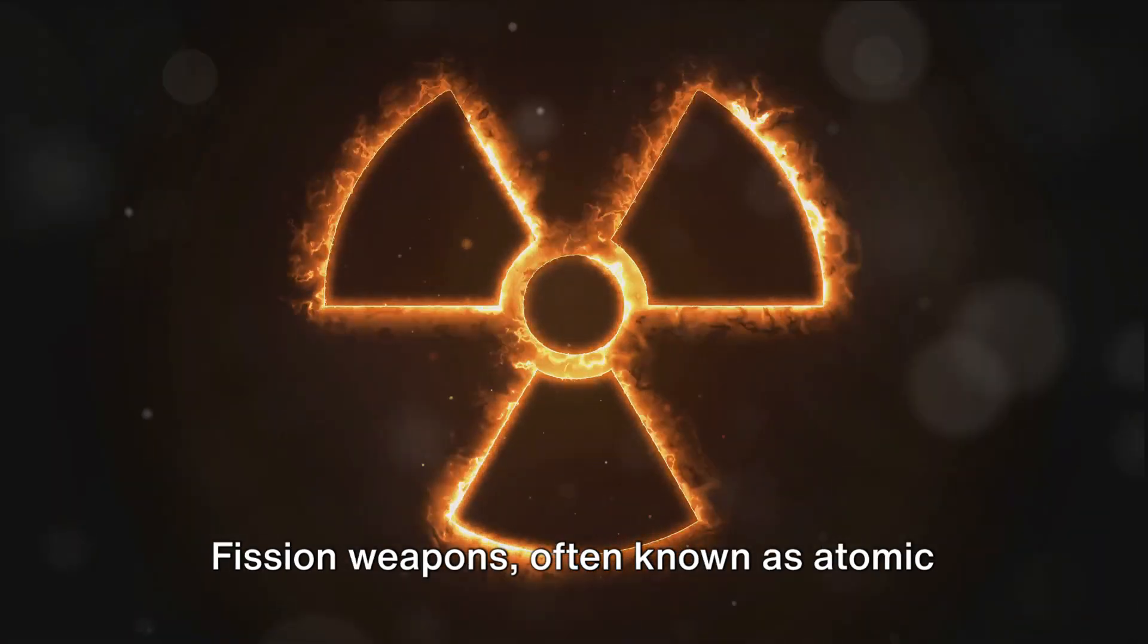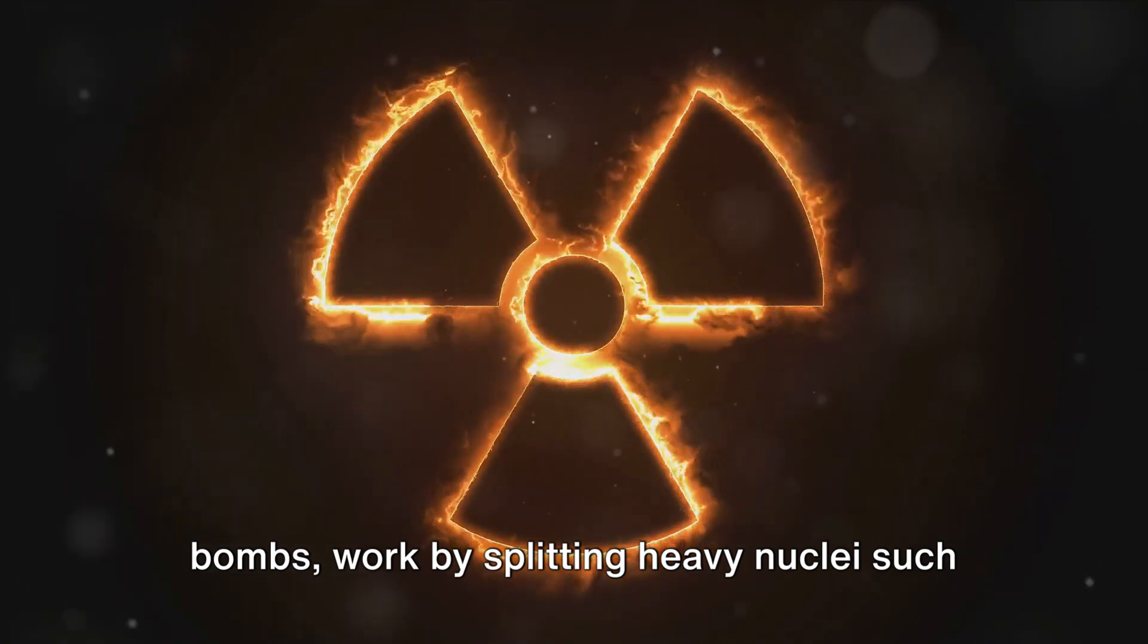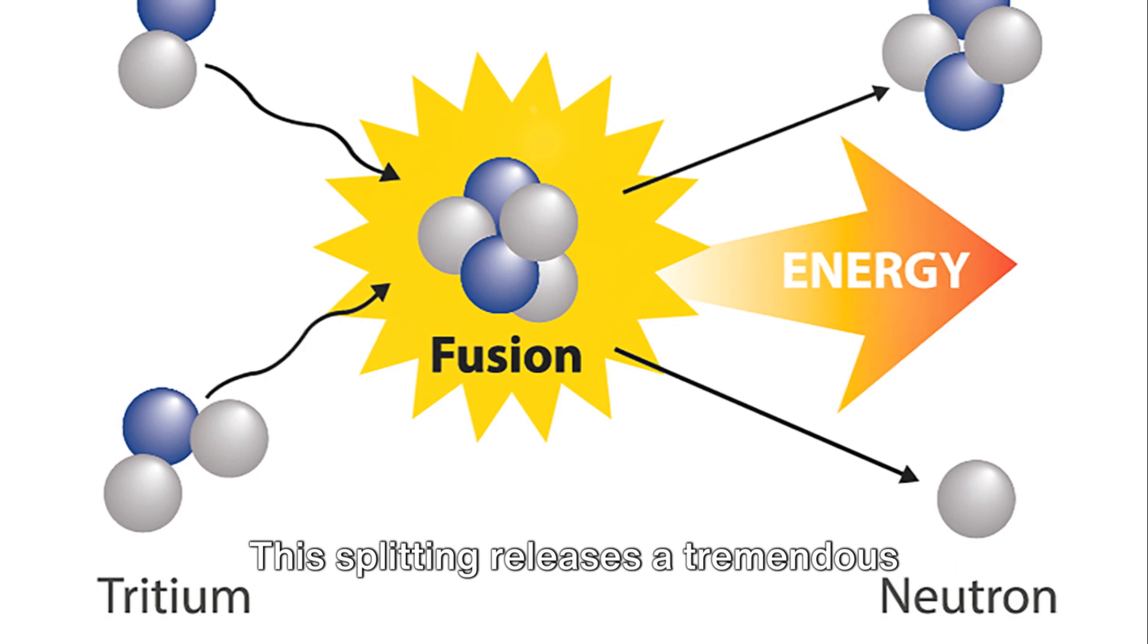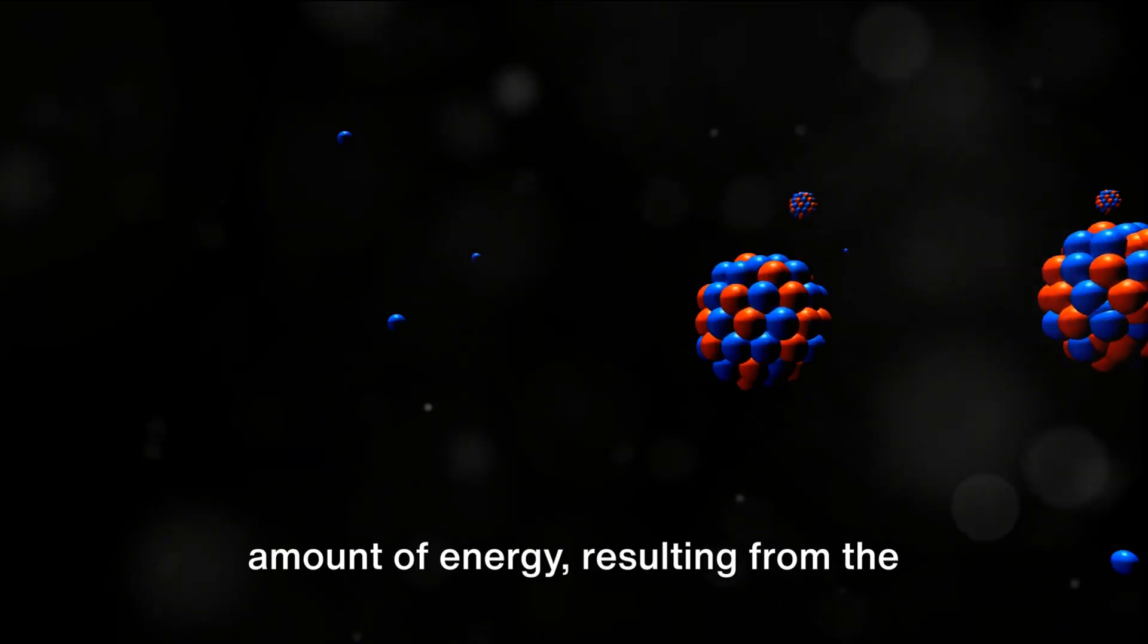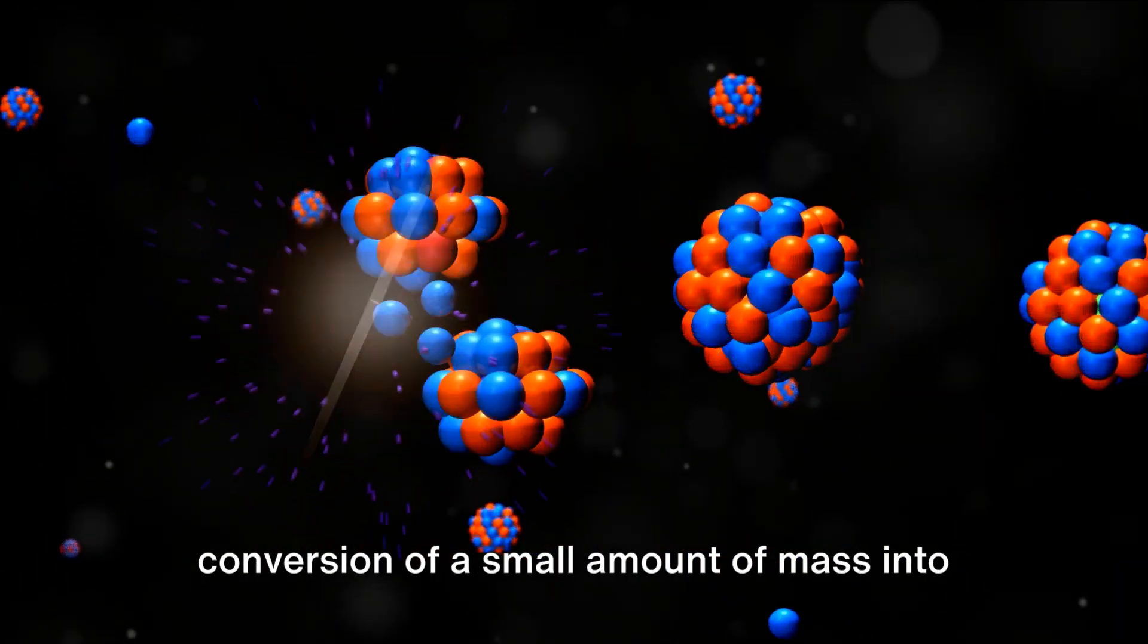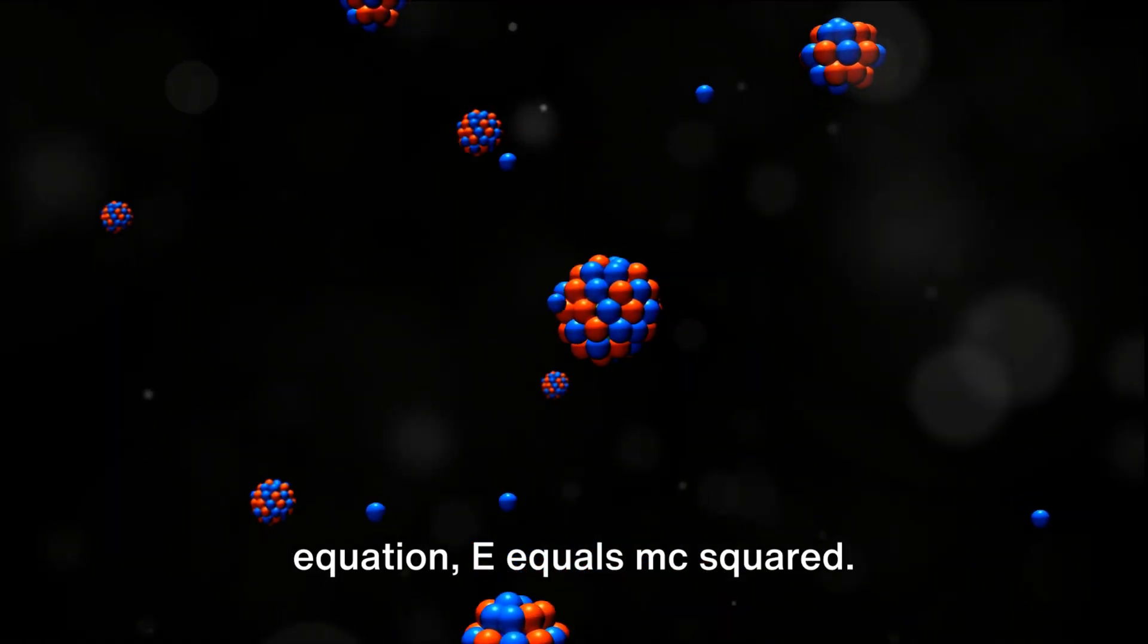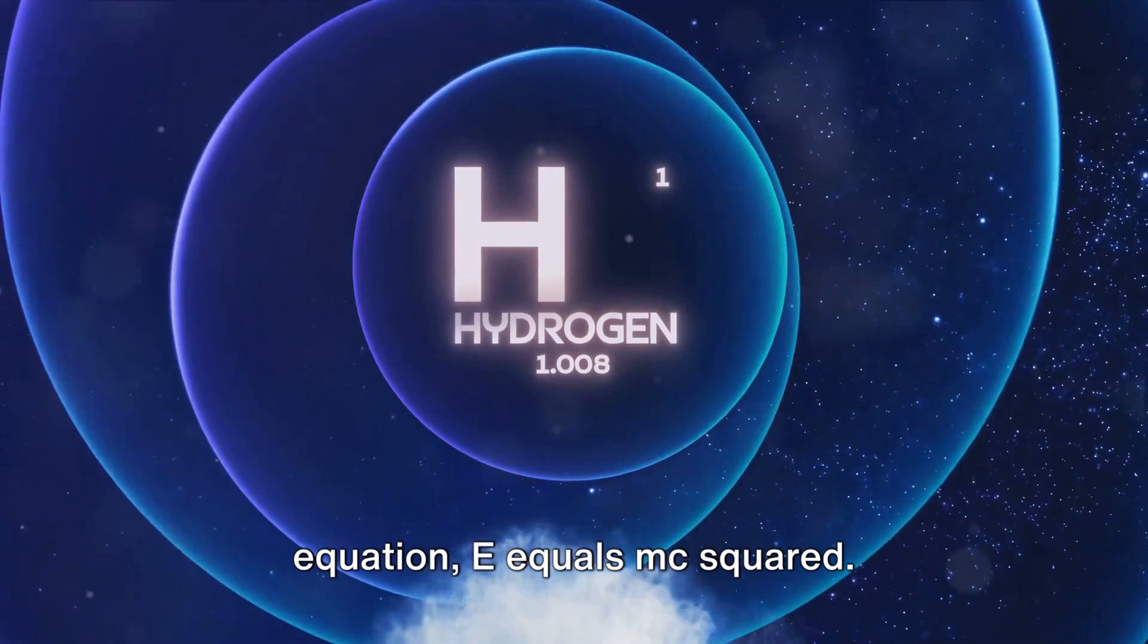Fission weapons, often known as atomic bombs, work by splitting heavy nuclei such as uranium or plutonium. This splitting releases a tremendous amount of energy, resulting from the conversion of a small amount of mass into energy, as described by Einstein's famous equation E equals mc squared.